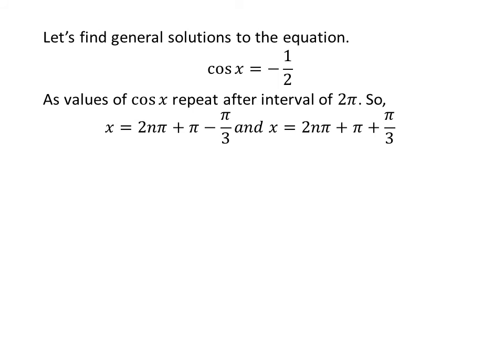Let us find the general solutions. As the values of cosine of x repeat after an interval of 2 times pi, the general solutions are 2 times n times pi plus pi minus pi upon 3, and 2 times n times pi plus pi plus pi upon 3, where n is an integer.